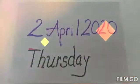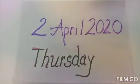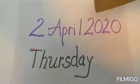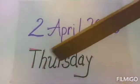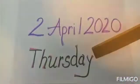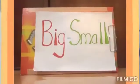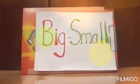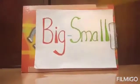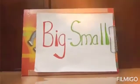Let us see what is today's date. Today's date is 2nd April 2020 and the day is Thursday. Let us start with our concept of big and small.